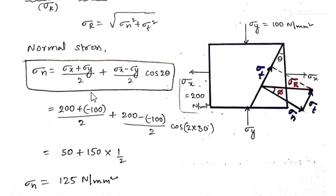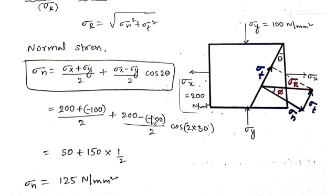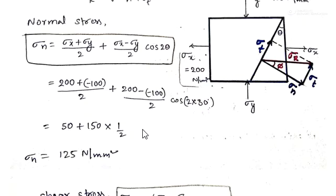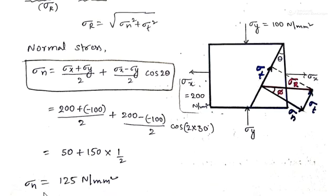Substituting the values: σx = 200 N/mm², σy = −100 N/mm², and θ = 30 degrees. The normal stress formula gives: (200 + (−100))/2 + (200 − (−100))/2 · cos(2 × 30°). When we substitute and simplify, we obtain the normal stress σn on the oblique plane.